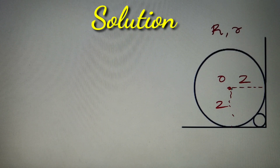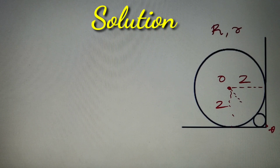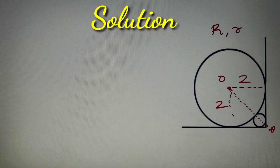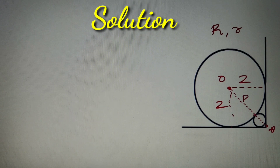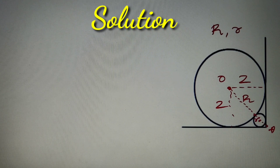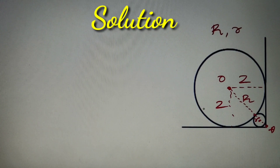If we consider point O as the center of the larger circle and point A at the corner of the right angle, and join these two points, we get a certain distance. From point O to the center of the smaller circle is equal to capital R plus small r. The distance from the smaller circle's center to point A is equal to root 2 times small r.